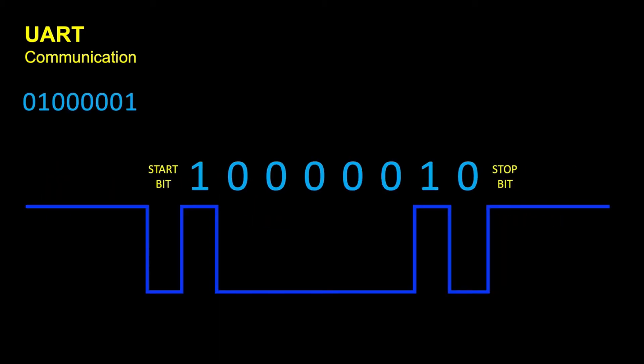So let's see how it goes with the signal. On the top we have our sequence of bits we want to send. We first send the start bit, and you can see that the voltage on the transmission line drops, so the receiver knows that data is coming. Then we send the least significant bit first, working toward the beginning of the sequence, and at the end of the 8 bits we send the stop bit.